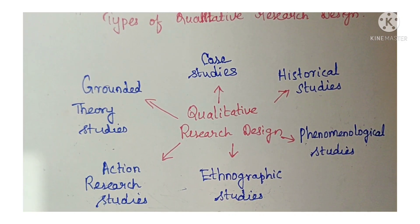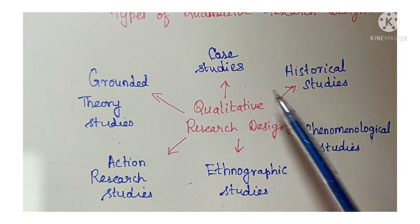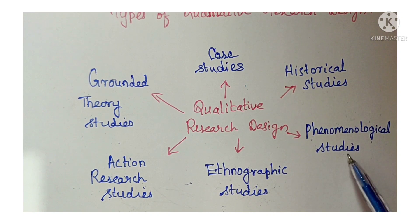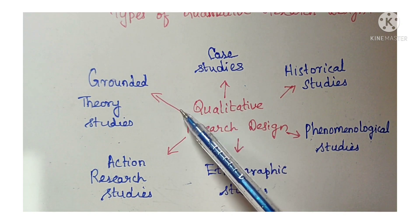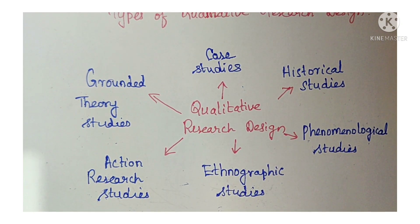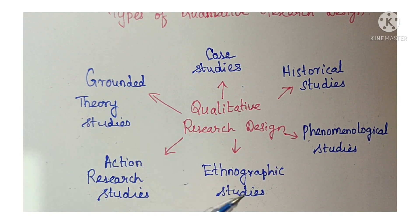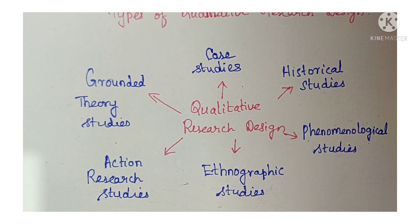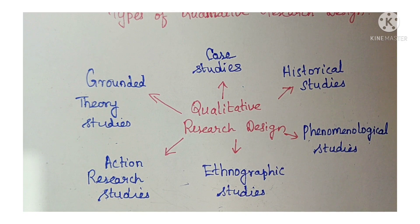There are six types of qualitative research designs: case studies, historical studies, phenomenological studies, ethnographic studies, action research studies, and grounded theory studies.